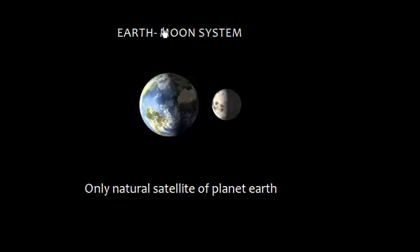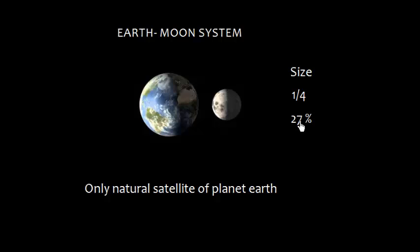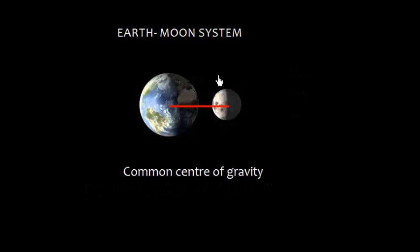Let us discuss the Earth-Moon system. The Moon is the only natural satellite of Earth, and the size of the Moon is about one-fourth, or we can say about 27% of the size of the Earth.